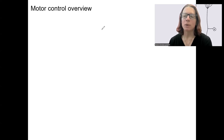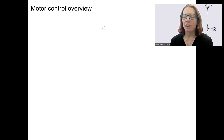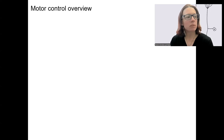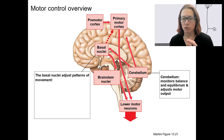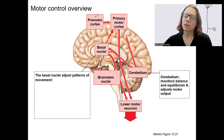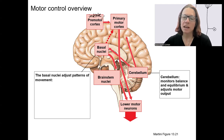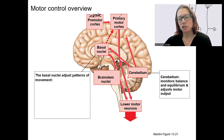We're now going to talk about motor control. I want to start with an overview in the brain — kind of what's going on — and that will lead us into the pathways that control the motor neurons that actually initiate movement. Movement is going to start in the premotor cortex, where it's initiated. That's in our frontal cortex, and that's going to initiate the primary motor cortex. This is conscious control of the initiation of a movement.